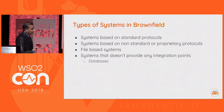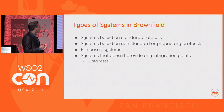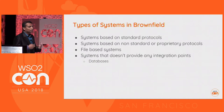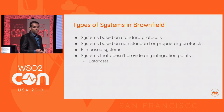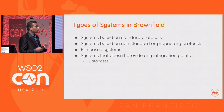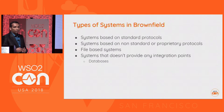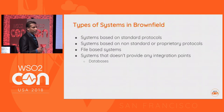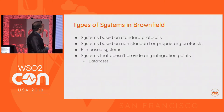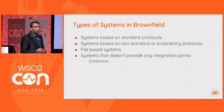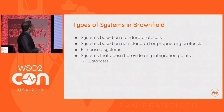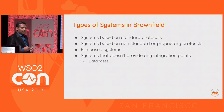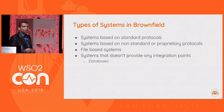We have identified several types of systems in the brownfield. Some systems expose a standard way to do integrations, meaning support for standard protocols. Integration with those systems is straightforward and most integration solutions provide support for them. Next, we have systems based on non-standard or proprietary protocols. These systems provide integration extension points, but they are not based on standards, so integration is comparatively not straightforward, but it's not impossible.